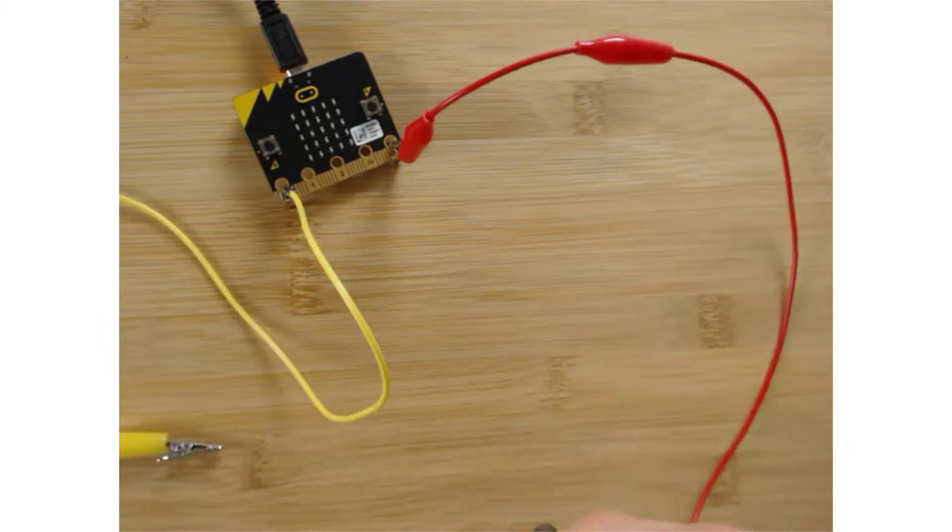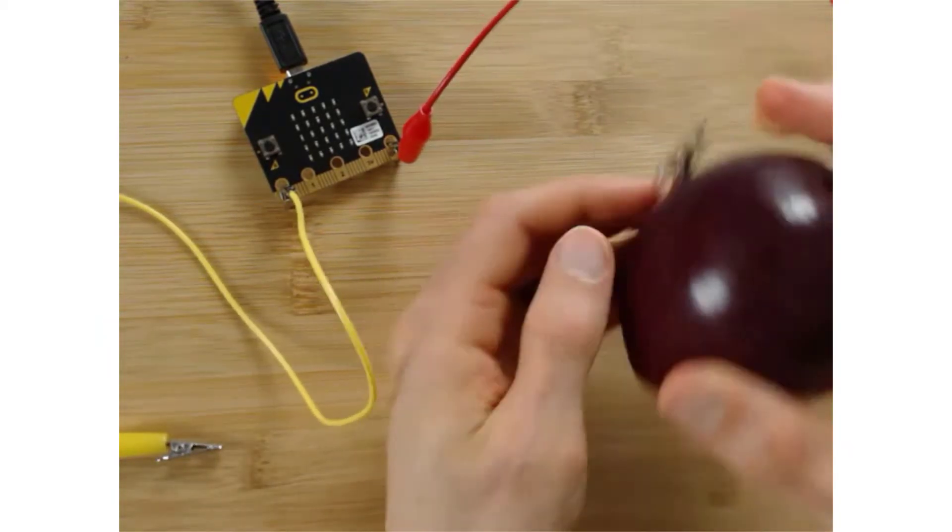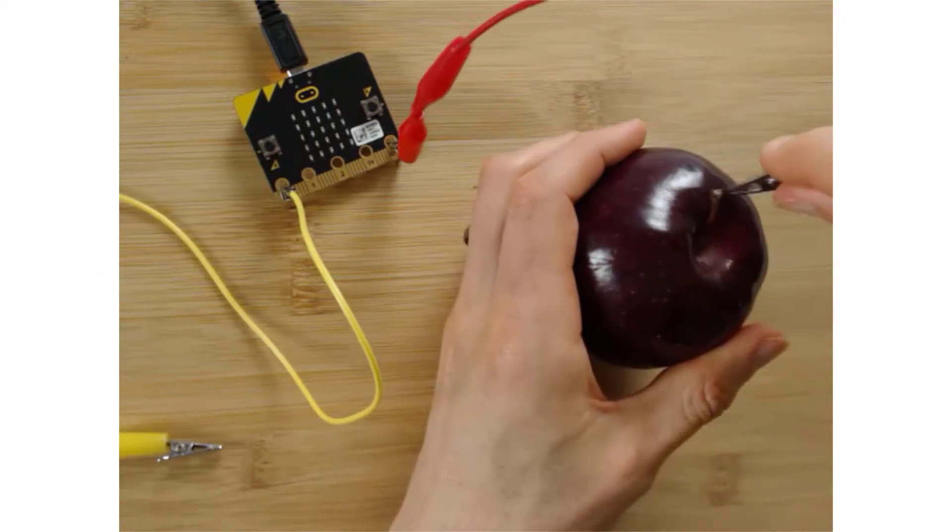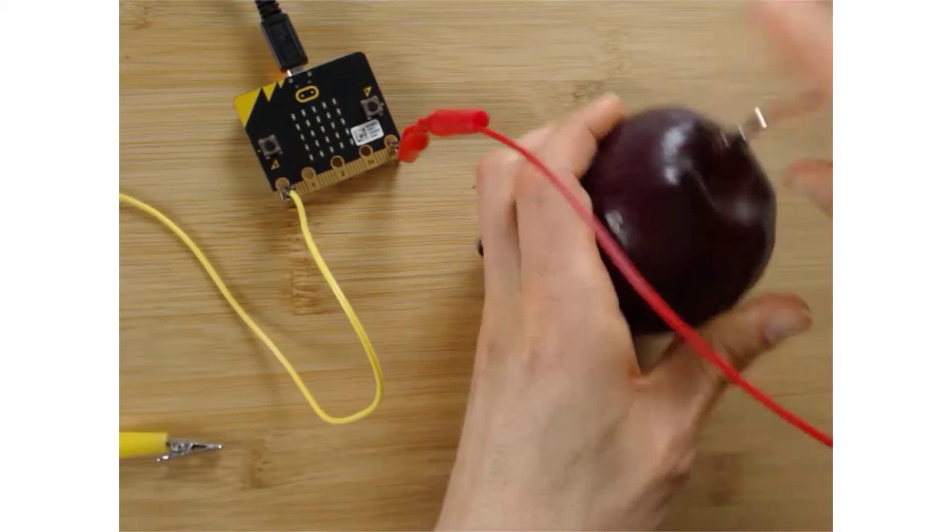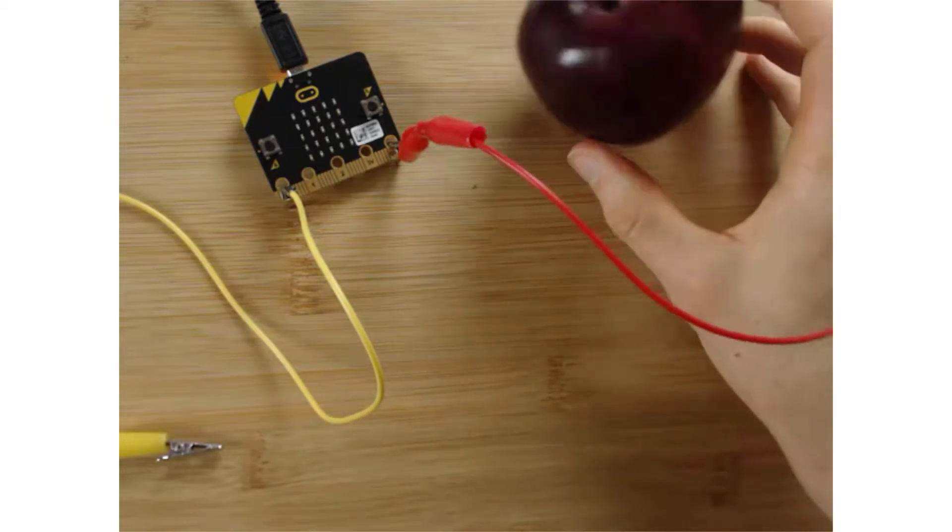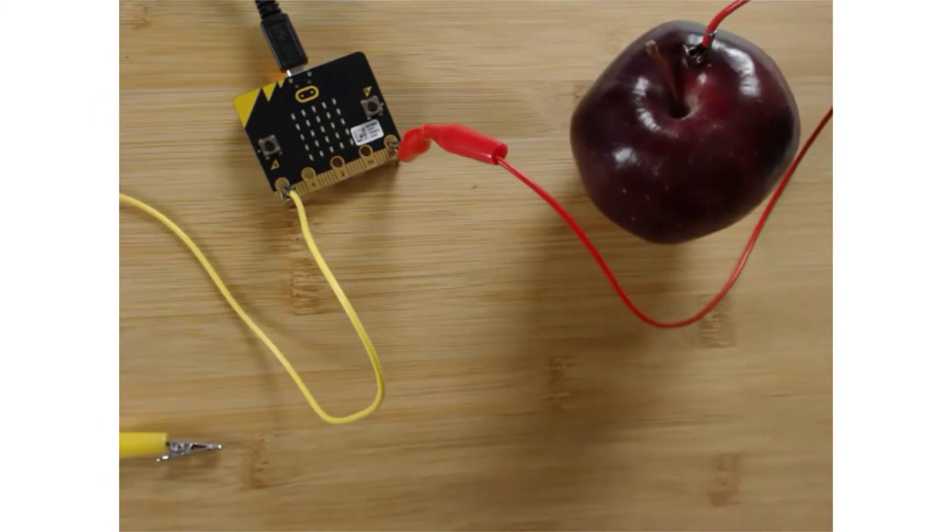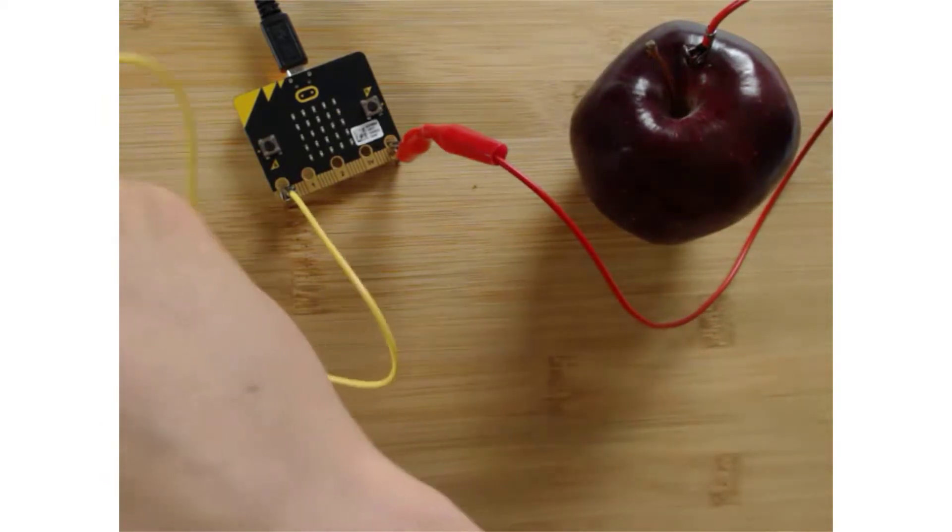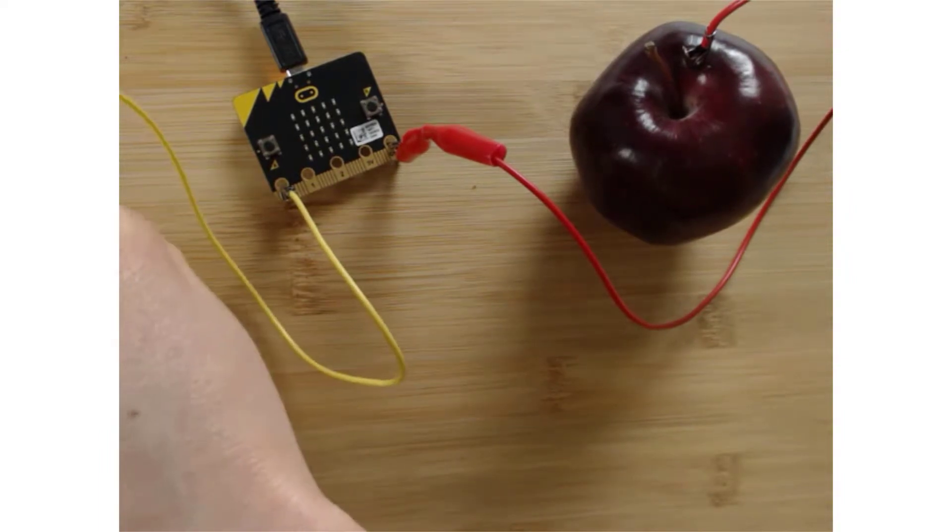Now what's cool is you can actually use this with anything that conducts electricity. So for example, if I were to put this inside of an apple like this, so I put it inside like that, stay right there, and then put the yellow one inside of a banana, because you know, it's yellow.